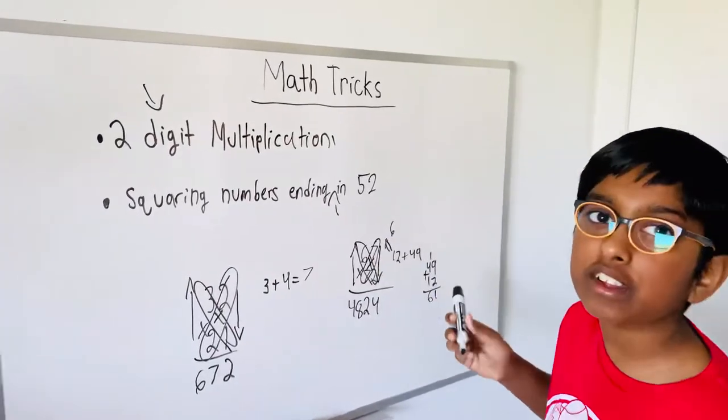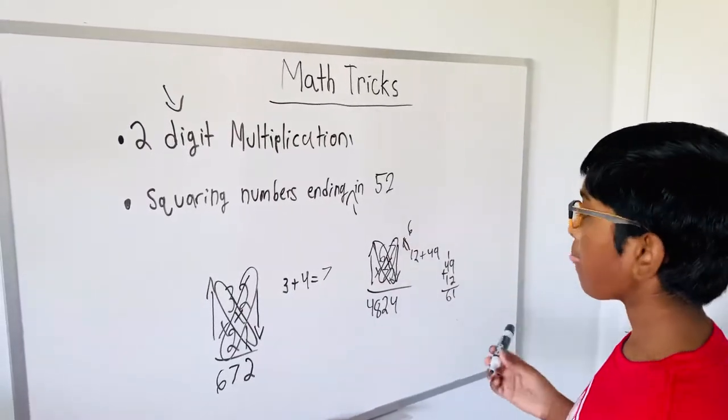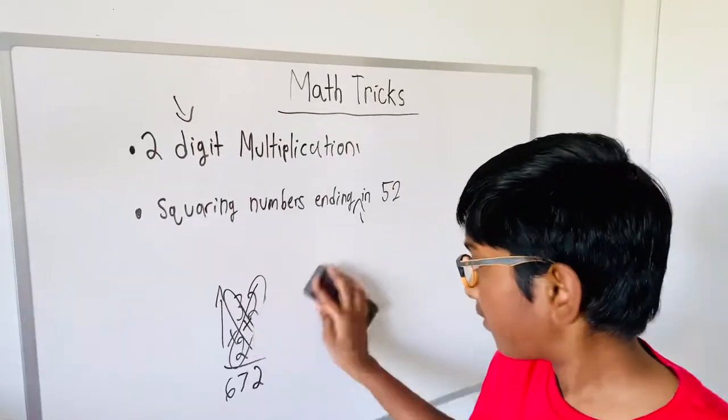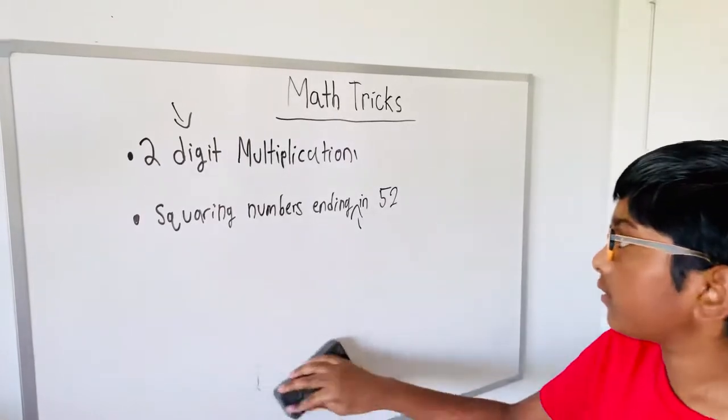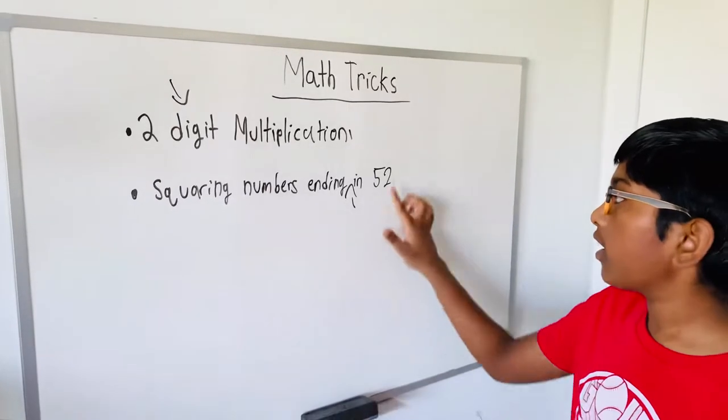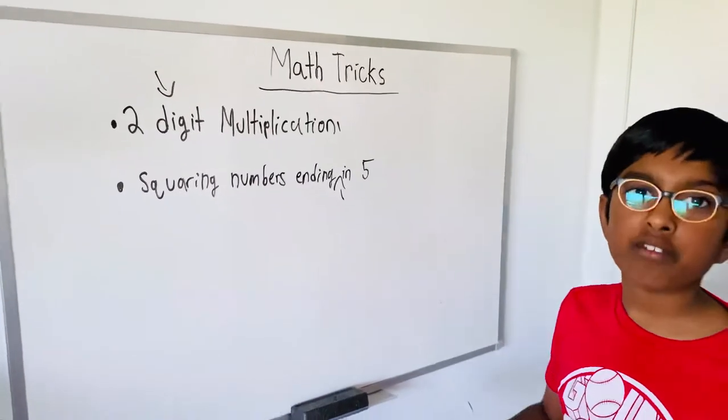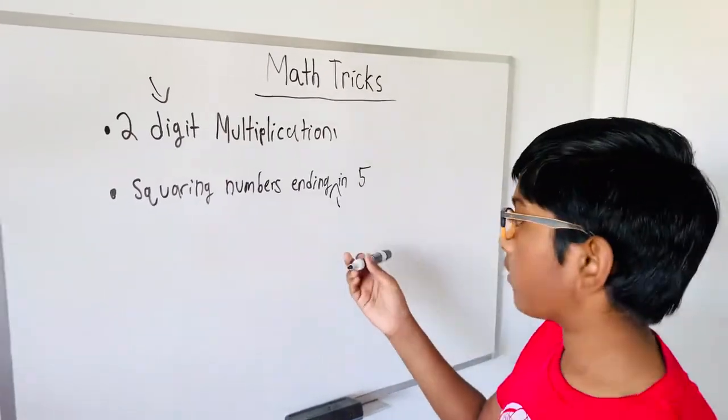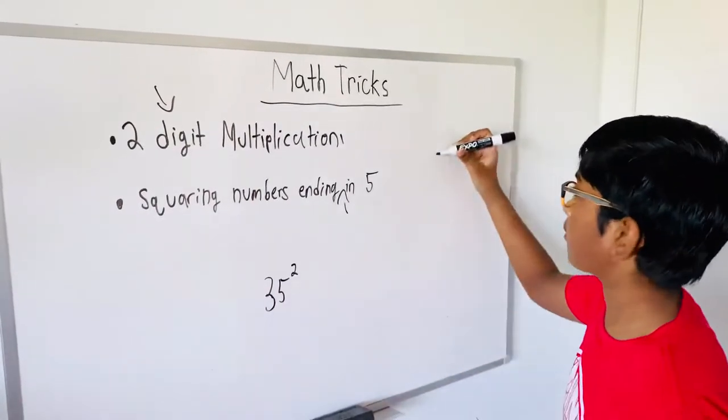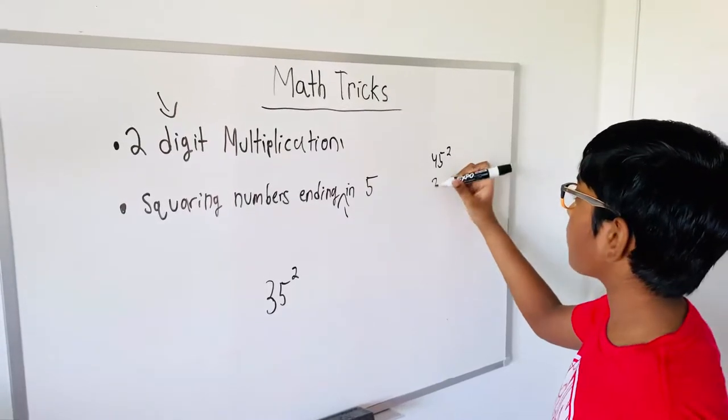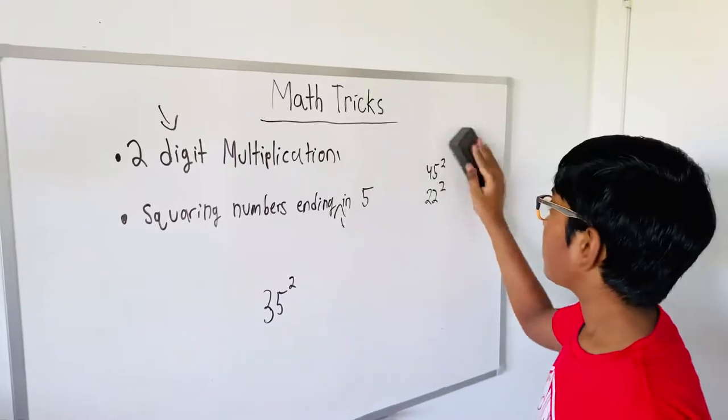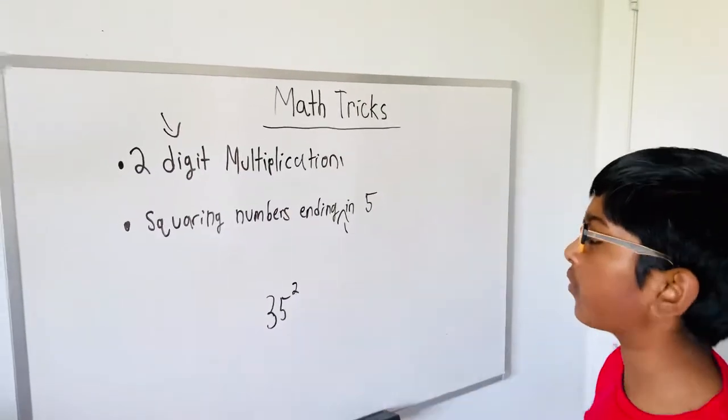Now let's do squaring numbers ending in five. This is our last topic. So let me just erase this. Now this trick only works for numbers ending with five. So pretend we have to do 35². It will work for these type of numbers like 45². It won't work for 22² - that's another method.